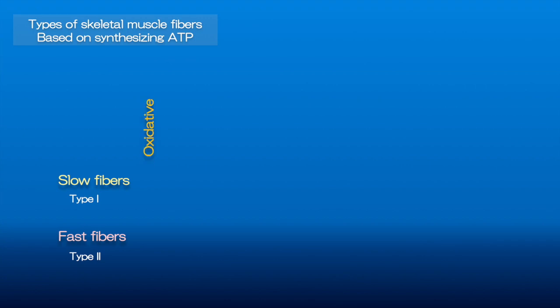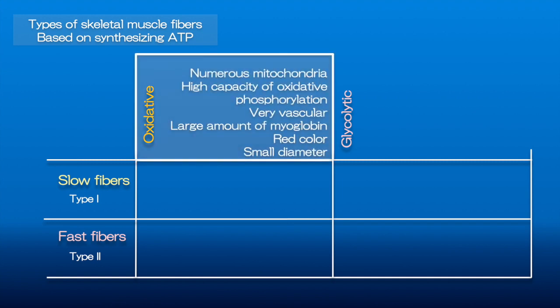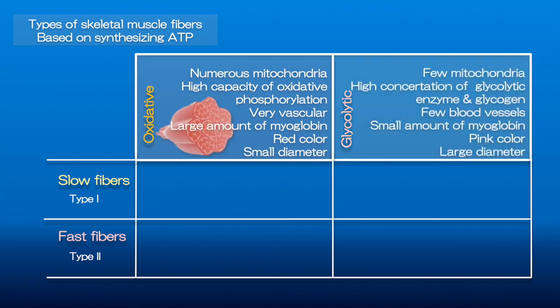Another important criterion for classifying fiber type is how the fiber produces ATP — whether it is oxidative or glycolytic. Oxidative fibers generally have numerous mitochondria, high capacity for oxidative phosphorylation, are highly vascular, and contain large amounts of myoglobin, which gives them a red color. In contrast, glycolytic fibers have few mitochondria, a high concentration of glycolytic enzymes and glycogen, few blood vessels, and small amounts of myoglobin, giving them a pink color. They also have a larger diameter compared to oxidative fibers.